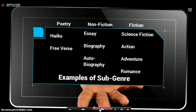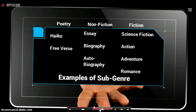Within those three big genres, we have subgenres. Some of these subgenres you may be familiar with, such as in poetry, we have haiku and free verse, to name a few. Nonfiction, we have essay, biography, autobiography, etc. And fiction subgenres include science fiction, action and adventure, and romance. Obviously there are more subgenres, but I'm just keeping the examples simple for today.